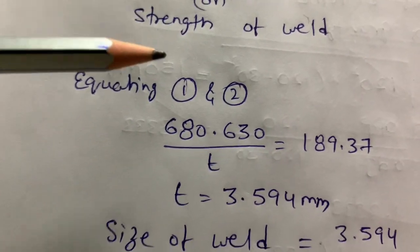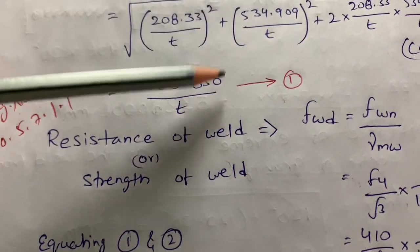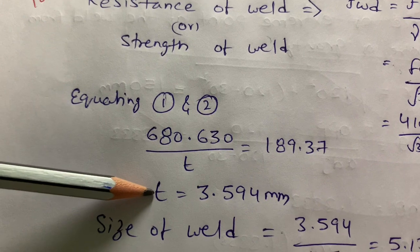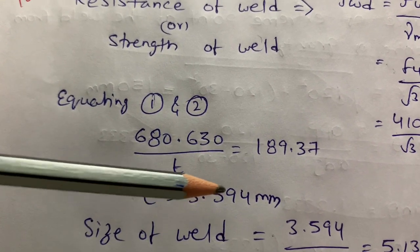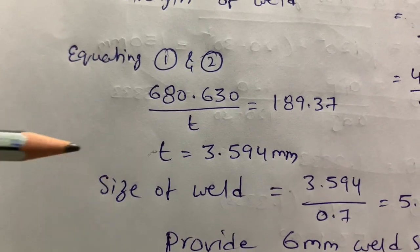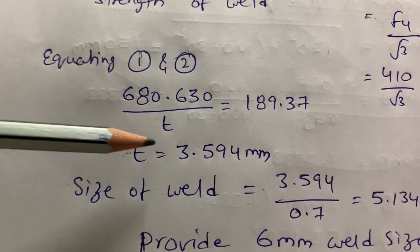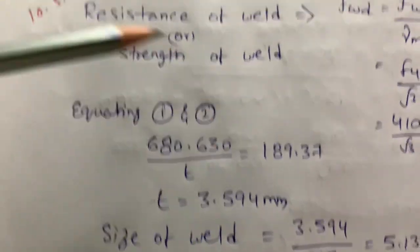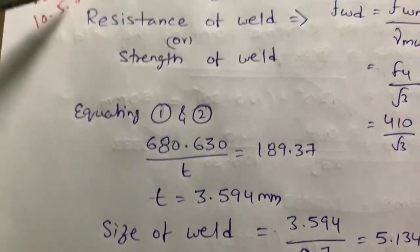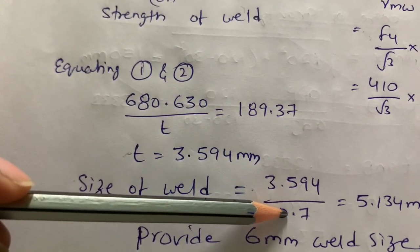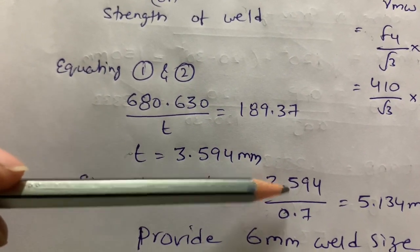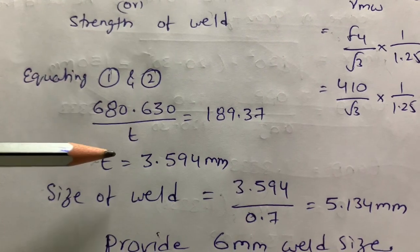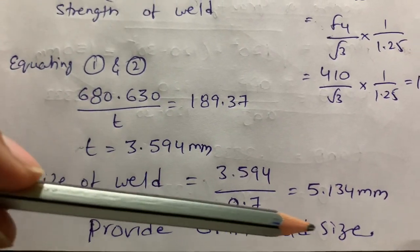By equating Equation 1 and Equation 2: 680.630/T = 189.37. Solving gives throat thickness T = 3.594 mm. Finally, size of the weld equals T divided by 0.7. The code (IS 800:2007, page 80) specifies that throat thickness shall not exceed 0.7 times the weld size. So size = 3.594/0.7 = 5.13 mm. We provide a 6 mm weld size.